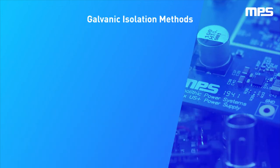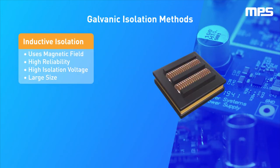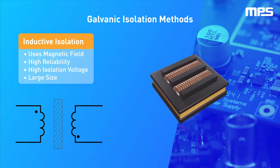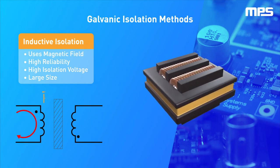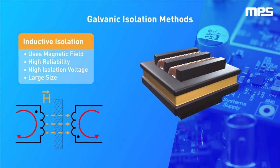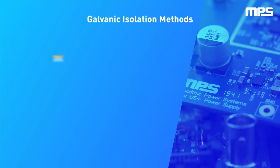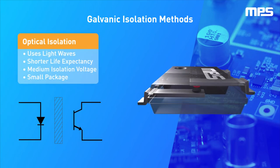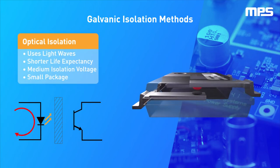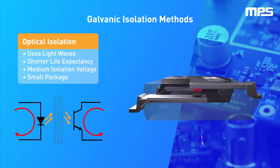Electrical isolation barriers can be implemented in three ways. The first is inductive isolation, where energy is transmitted from one side to the other through magnetic fields. The second is optical isolation, implemented using optocouplers, which transmit data through light signals.